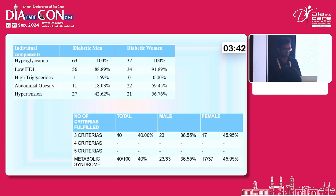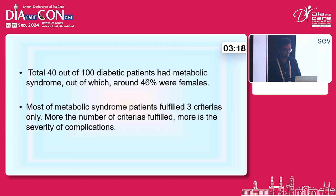Only 3 criteria were matched. Among 100 patients total, 40 patients matched the metabolic syndrome criteria. Among 63 diabetic men, 23 males matched metabolic syndrome criteria, and among 37 female patients, 17 females matched metabolic syndrome criteria. Total 40 out of 100 diabetic patients had metabolic syndrome, of which around 46% were female. Most metabolic syndrome patients fulfilled 3 criteria only, and more criteria fulfilled correlates with greater severity of complications.